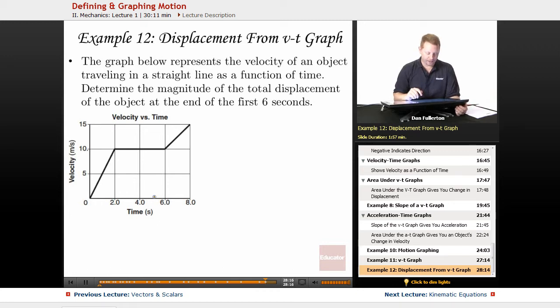Let's take a look at one last example. How can we get displacement from a velocity time graph? The graph below shows the velocity of an object traveling in a straight line as a function of time. Determine the magnitude of the total displacement of the object at the end of the first 6 seconds.